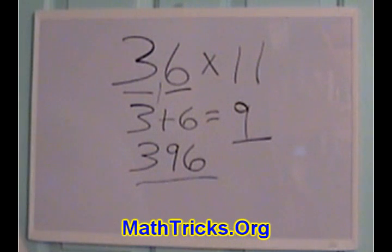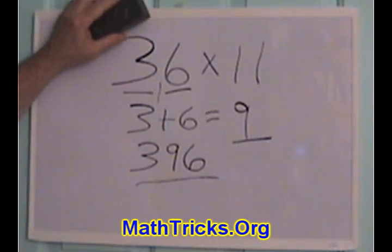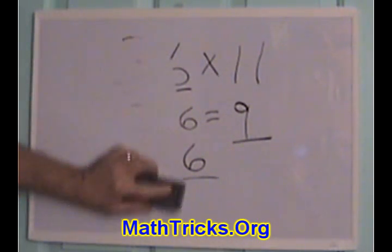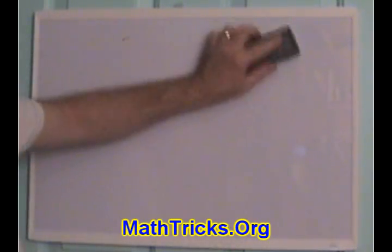Using this method with a little bit of practice, you can very quickly calculate any two-digit number by 11, and you can do it faster than anyone can do it with a calculator.